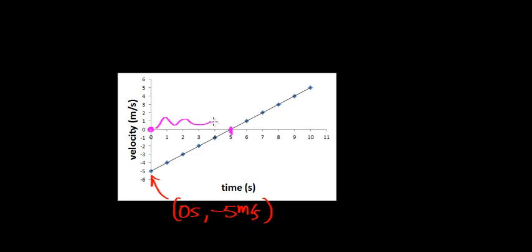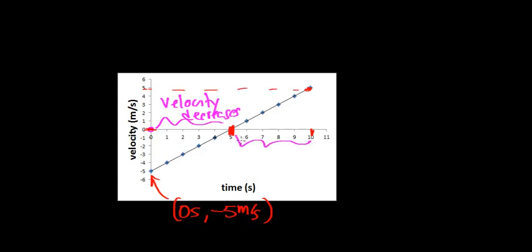Notice that during this first five second interval of time the velocity of this object is not only changing, but the velocity is decreasing — or the object is going to be slowing down. Then what happens is the velocity starts to increase from five seconds to ten seconds. The velocity is going to go from zero meters per second to five meters per second, so over this interval from five to ten seconds the velocity is actually going to increase.